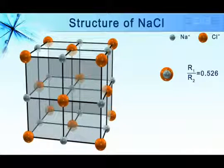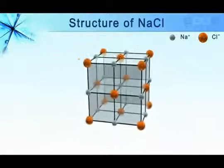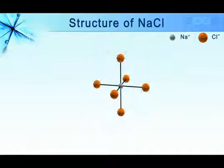The radius ratio suggests that the coordination number of each ion is 6. So in NaCl structure, each Na+ ion is surrounded by 6 Cl- ions.